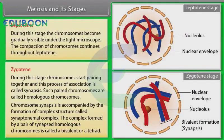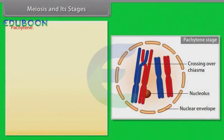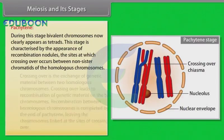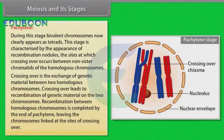Next stage, pachytene, is comparatively longer than previous two stages. During pachytene stage, bivalent chromosomes now clearly appear as tetrads. This stage is characterized by the appearance of recombination nodules, the sites at which crossing over occurs between non-sister chromatids of the homologous chromosomes. Crossing over is the exchange of genetic material between two homologous chromosomes. Crossing over leads to recombination of genetic material on the two chromosomes. Recombination between homologous chromosomes is completed by the end of pachytene, leaving the chromosomes linked at the sites of crossing over.